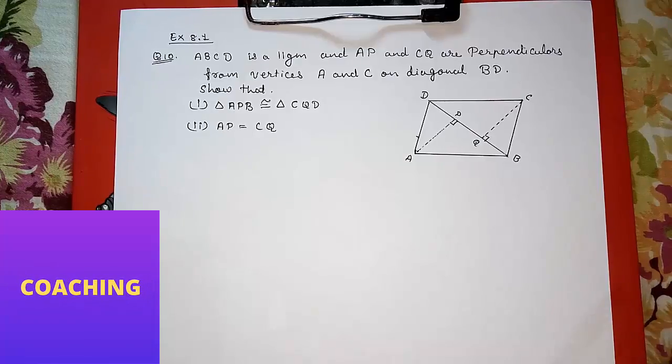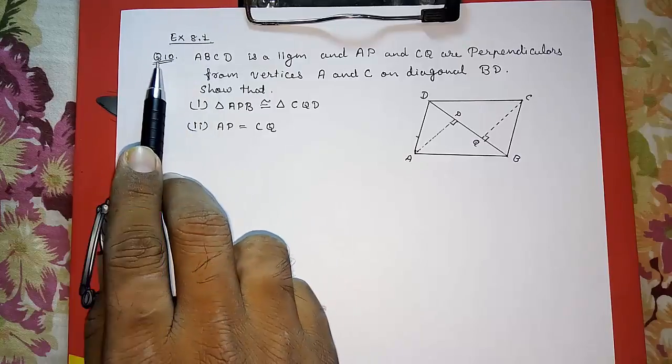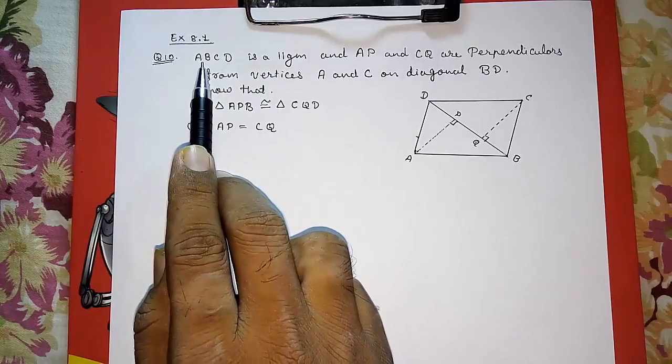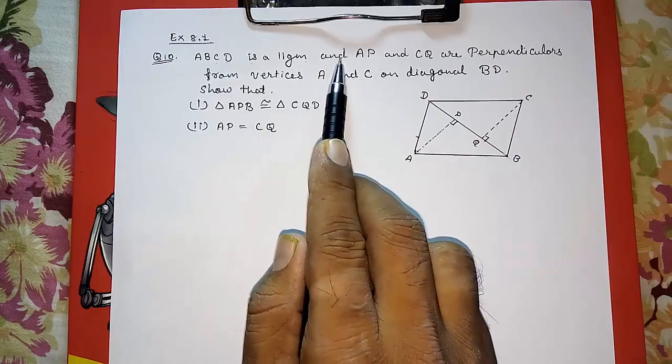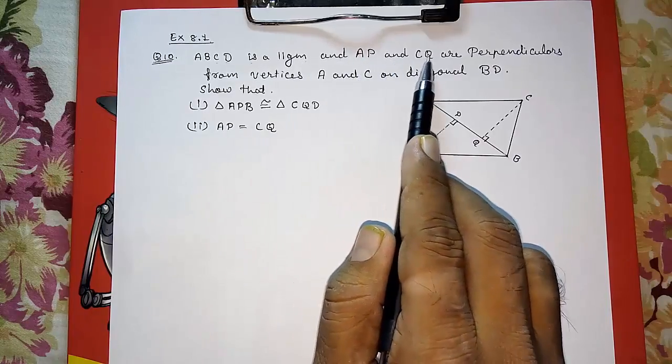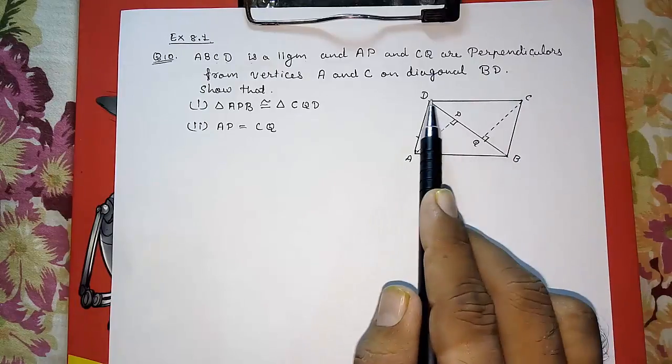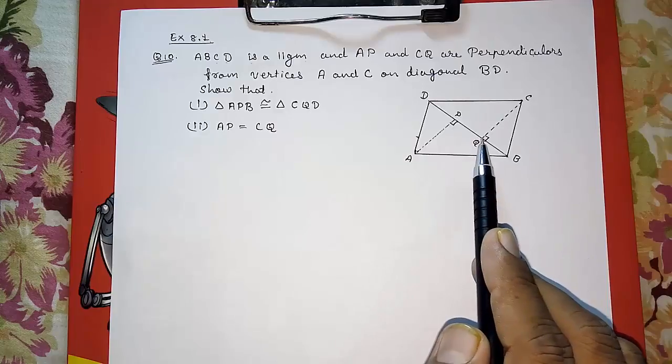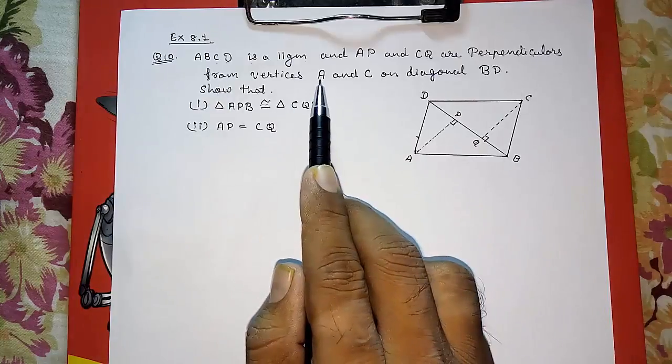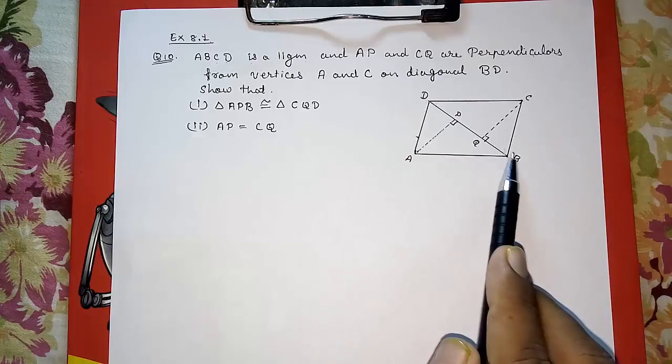Hello friends, today we are going to solve CBSE class 9th exercise 8.1 question number 10. ABCD is a parallelogram and AP and CQ are perpendiculars. Look here, ABCD is a parallelogram. AP and CQ are perpendiculars from vertices A and C on diagonal BD.